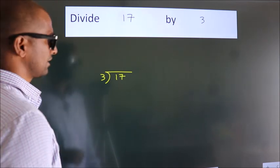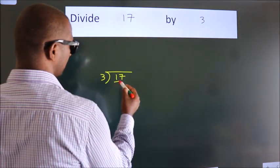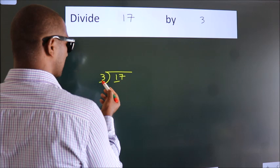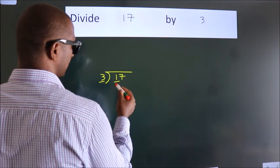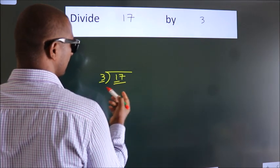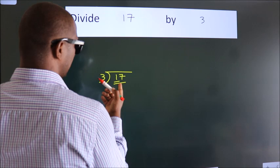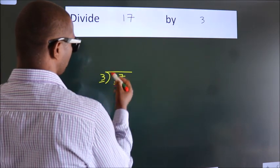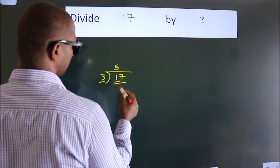Next, here we have 1, here 3. 1 is smaller than 3, so we should take 2 numbers, 17. A number close to 17 in the 3 table is 3 times 5, which is 15.